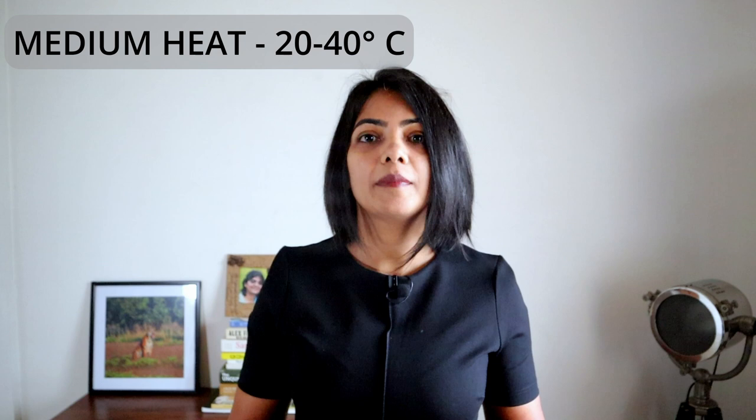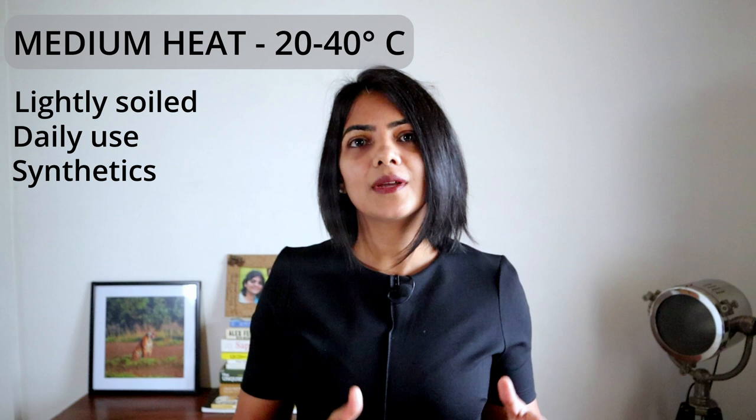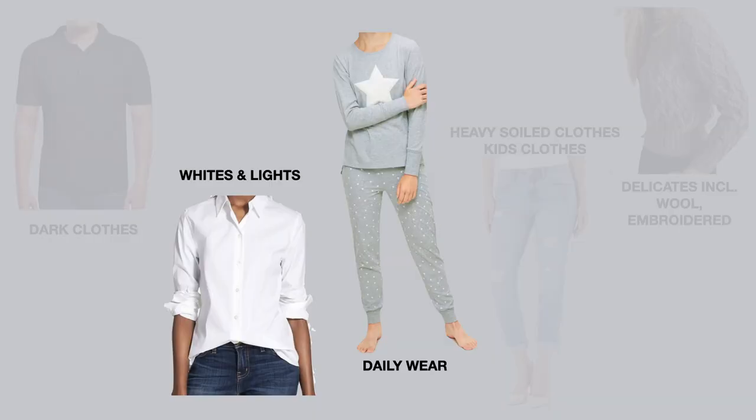When to use medium heat, that is between 20 to 40 degrees centigrade. Medium heat can only be used for lightly soiled clothes, daily use clothes, and synthetic fabrics like nylon, polyester, and rayon blends. Among the segregation made earlier, light and white colored clothes and regular use clothes fall under this category.